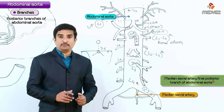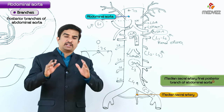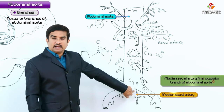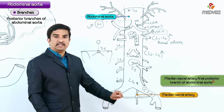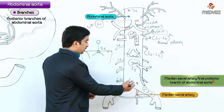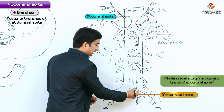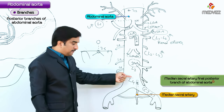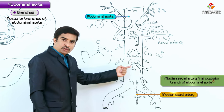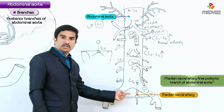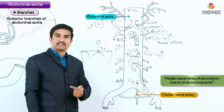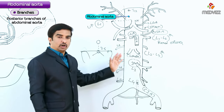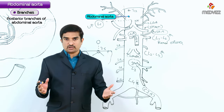The median sacral artery is considered the final posterior branch of the abdominal aorta — an important MCQ point. It arises from the posterior surface of the abdominal aorta just superior to the bifurcation, passes inferiorly over the anterior surface of the lower lumbar vertebrae, then over the sacrum and coccyx, supplying those structures. This concludes the discussion of the abdominal aorta and its various branches.